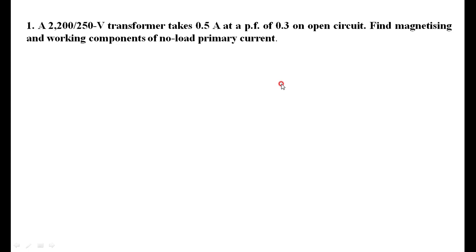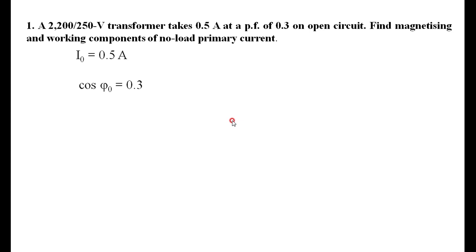The first numerical is on the transformer on no load. The statement of the numerical is: a 2200/250 volt transformer takes 0.5 amperes at a power factor of 0.3 lagging on open circuit. Find the magnetizing and working components of the no-load primary current.